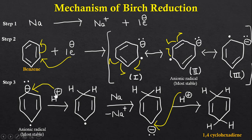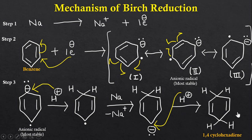In step three, H+ attacks the negatively charged carbon atom. This H+ comes from ethyl alcohol, which acts as a proton donor. Then again, sodium loses one electron, which is added to a carbon atom to give a carbanion. Protonation then takes place from ethyl alcohol, and we obtain 1,4-cyclohexadiene. In this way, the benzene molecule is reduced to 1,4-cyclohexadiene.